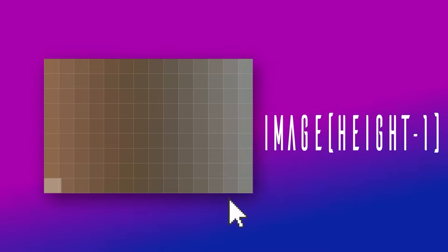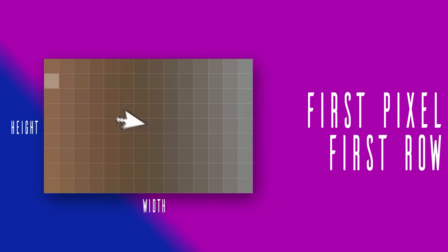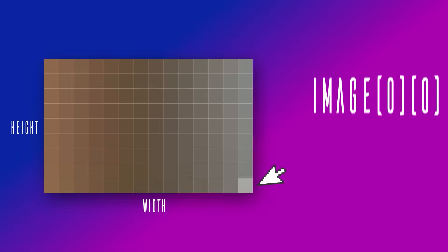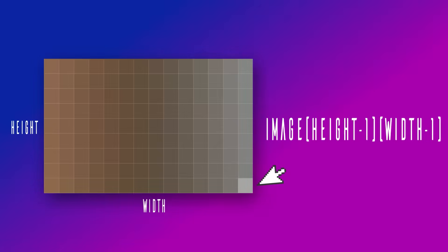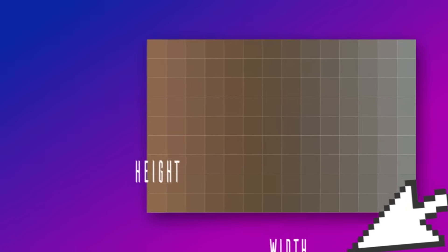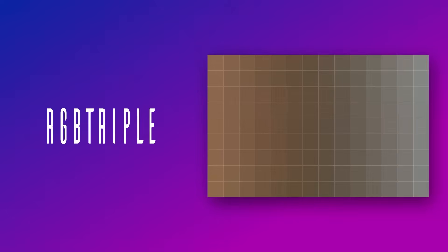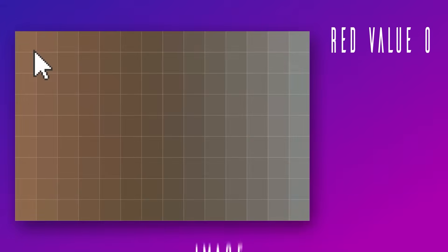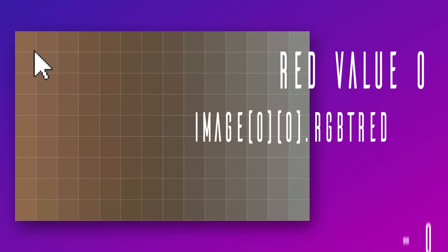To get a particular pixel in the image, you use both width and height indices. For example, the first pixel in the first row has index image[0][0]. The last pixel in the last row has index image[height-1][width-1]. We can use this notation to access any pixel. Since every pixel is represented by the struct rgbtriple, we can access the red, blue, and green values using the dot notation — for example, image[0][0].rgbtRed = 0.